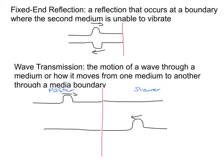The other possible behavior is transmission. Wave transmission is the motion of a wave through a medium or how it moves from one medium to another through a media boundary. You can think of wave transmission through a medium on its own or through a boundary. Either one can be referred to as wave transmission.